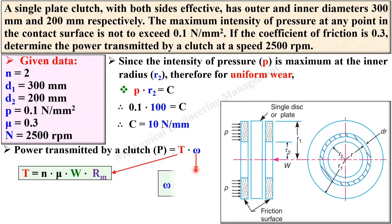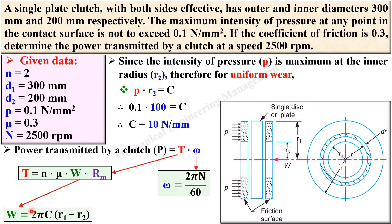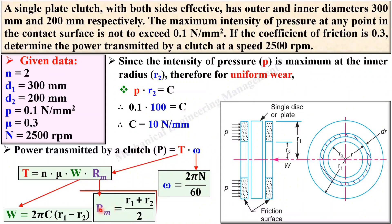The angular velocity ω = 2πN/60, and since rpm is given you can find ω. However, you still need W and rm. For the load W, there is a formula: W = 2πc(r1 − r2). You have the value of c and both r1 and r2, so you can find W. For the mean radius, rm = (r1 + r2) / 2.